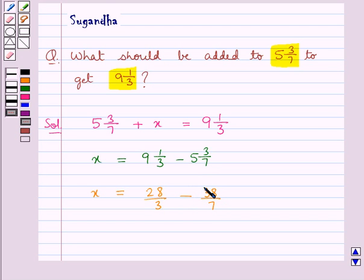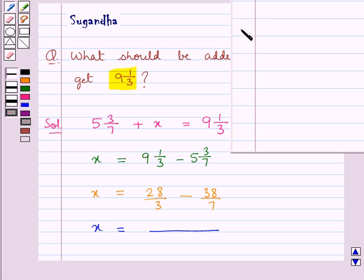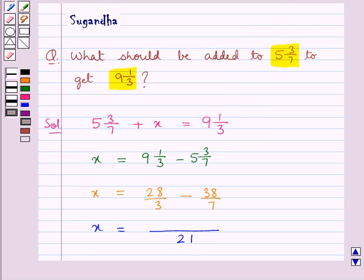To subtract these two fractions, we need to find out the LCM of their denominators that is 3 and 7, and the LCM of 3 and 7 is equal to 21. So we write 21 here in the denominator. Now, 3 times 7 is 21, so in the numerator we have 28 multiplied by 7 minus 7 times 3 is 21.